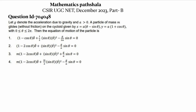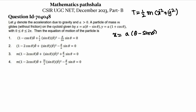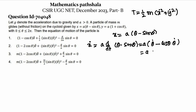The kinetic energy of the particle is T = ½m(ẋ² + ẏ²). Here ẋ: since x = a(θ - sinθ), ẋ will be a · d/dt(θ - sinθ), which becomes a(θ̇ - cosθ · θ̇), so ẋ = a(1 - cosθ)θ̇.